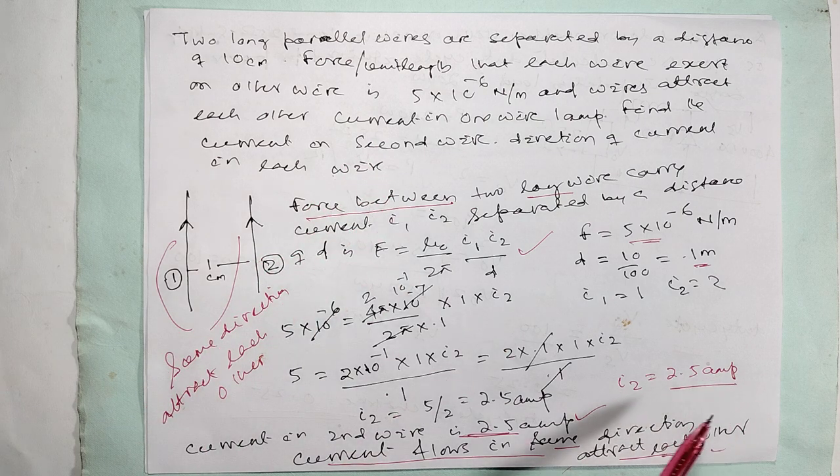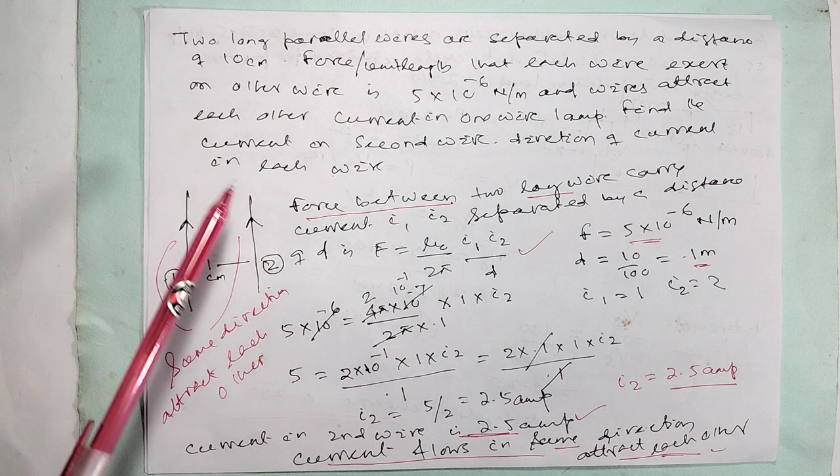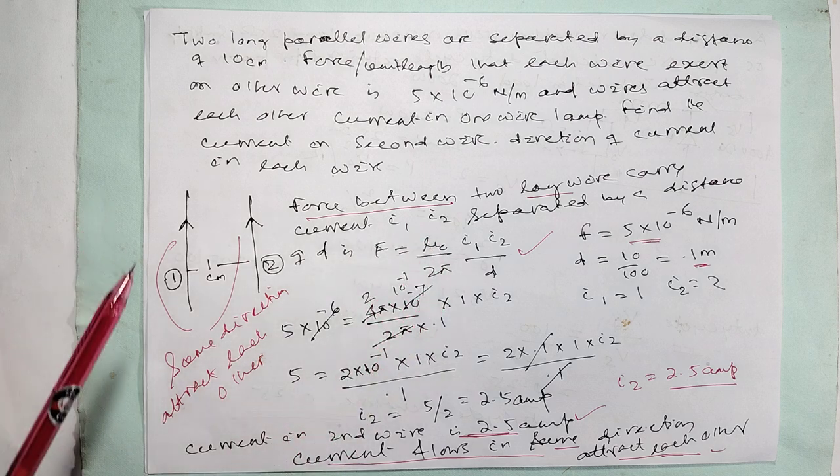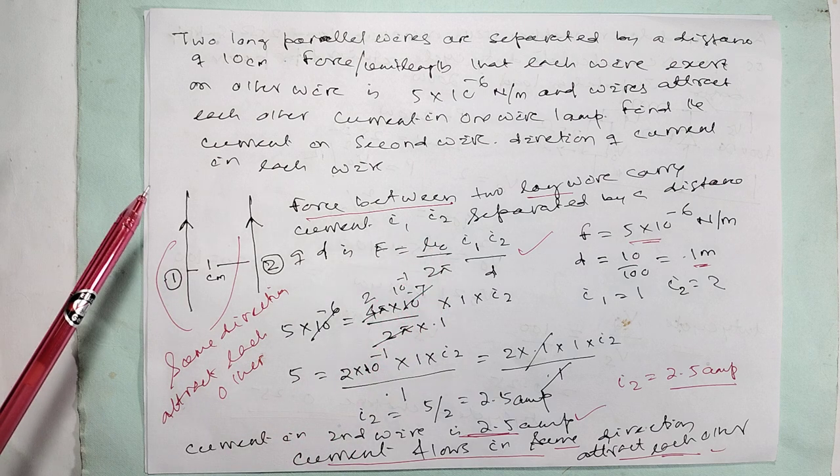I2 is coming 2.5 ampere. Very simple calculation if you just apply the formula. Then what is the direction of current in this current?